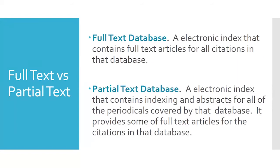The library has two different types of databases. Some contain the full text of journal articles, so you click on the title and get the entire article. Some only contain partial text like an abstract or an index. These can be useful for locating things you can then request through interlibrary loan, but if we only have partial text access, there will be a delay in getting the full text.